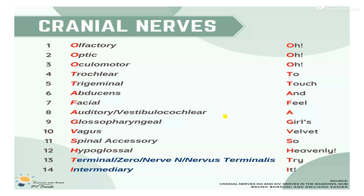You can see here there are 14 different types of cranial nerves. We can take a start from the mnemonic: 'One O O O To Touch And Feel A Girl's Velvet — So Evenly Try It.'